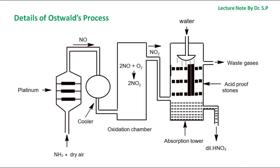Details of Ostwald's Process for the manufacture of nitric acid are shown in the diagram. First, ammonia and dry air are passed into a converter where ammonia is oxidized to form nitric oxide in the presence of catalyst platinum gauze. The nitric oxide gas is then passed into the cooler, and further reacts with oxygen gas in the oxidation chamber to form nitrogen dioxide.